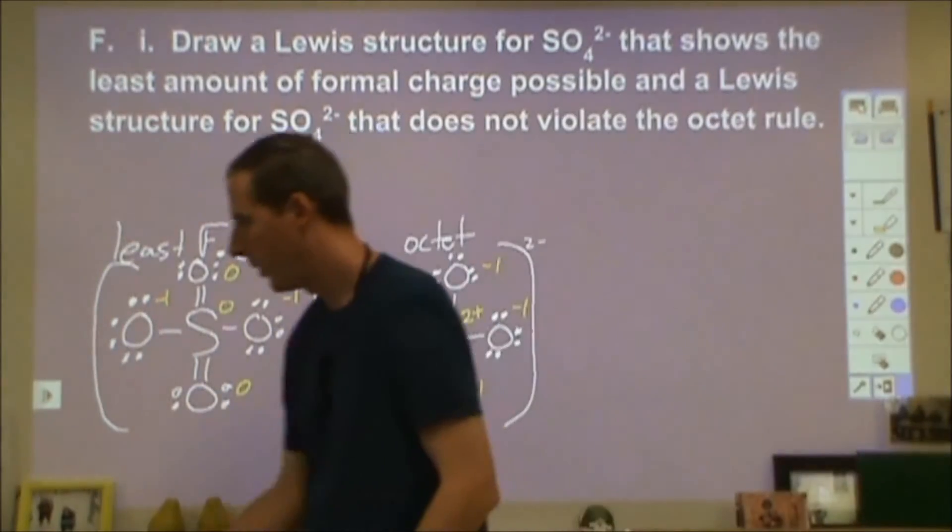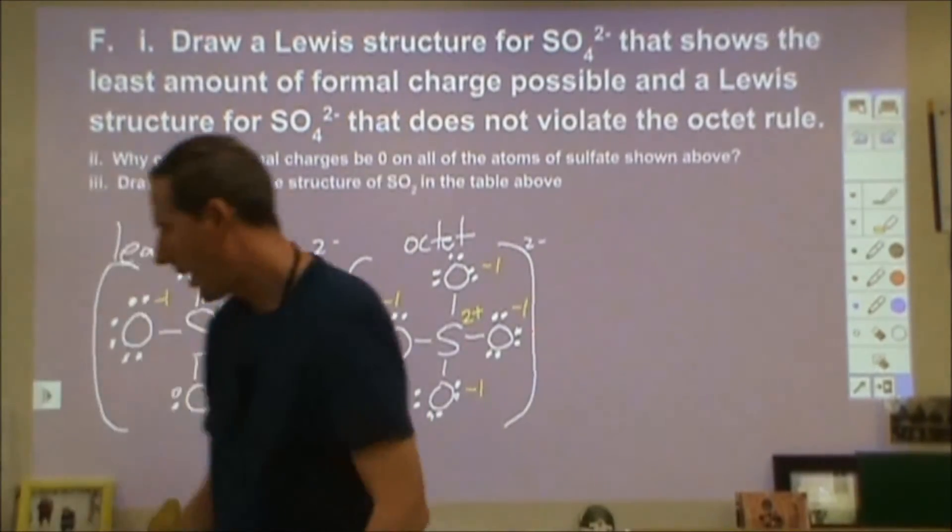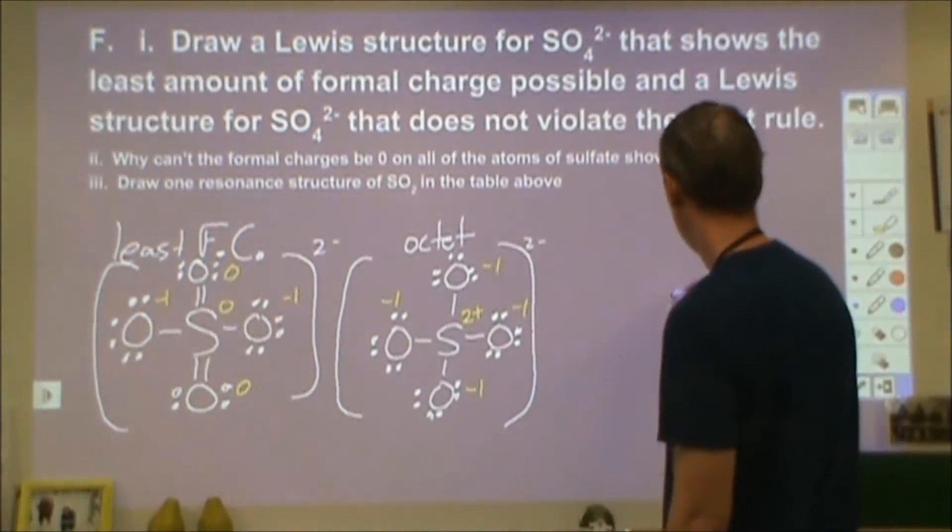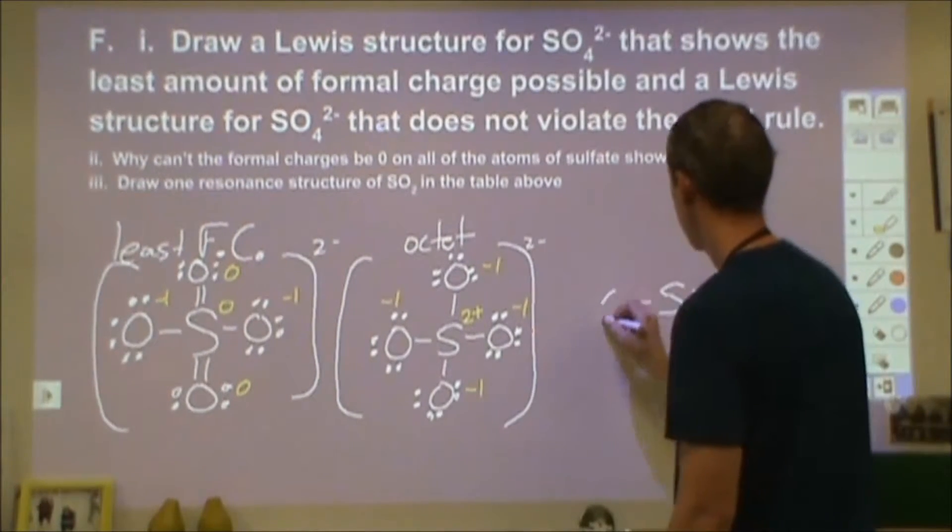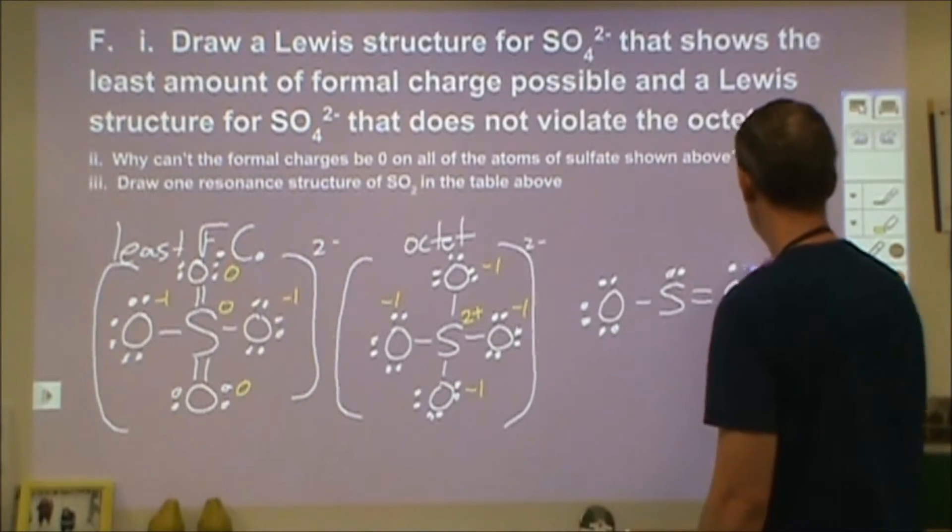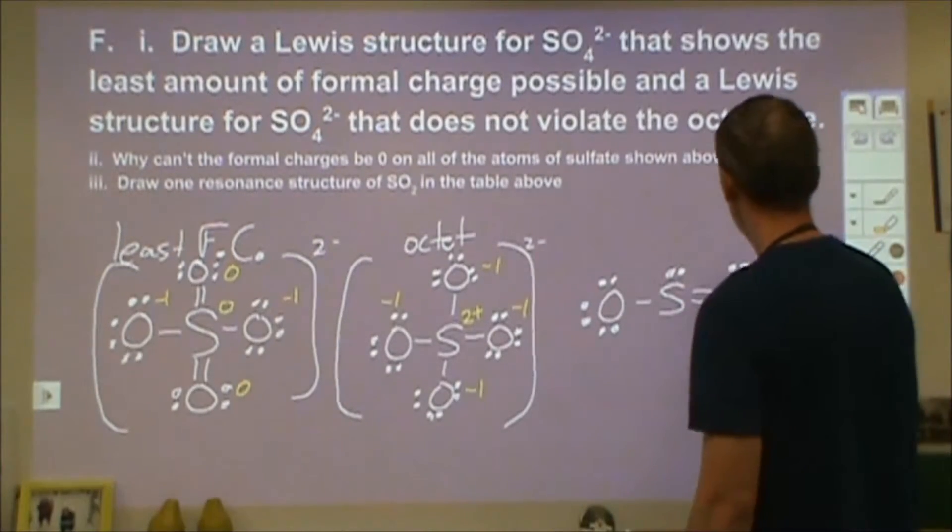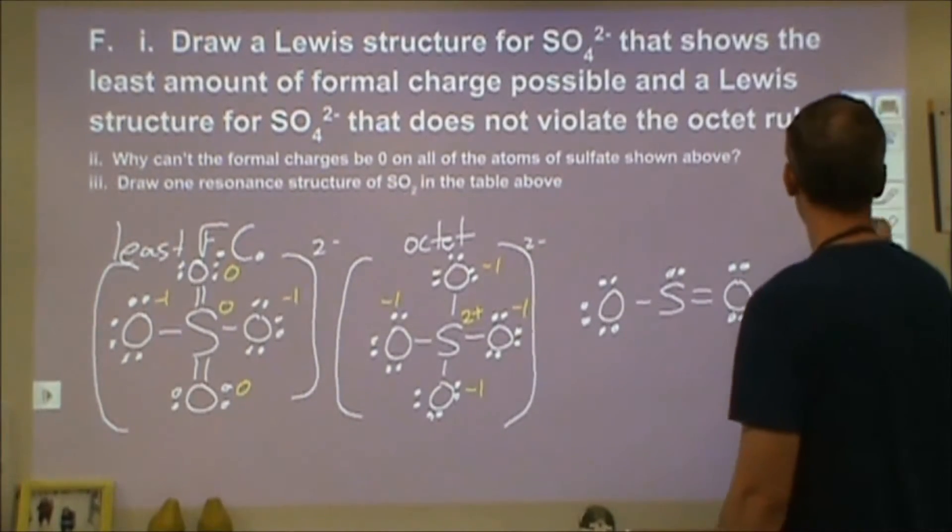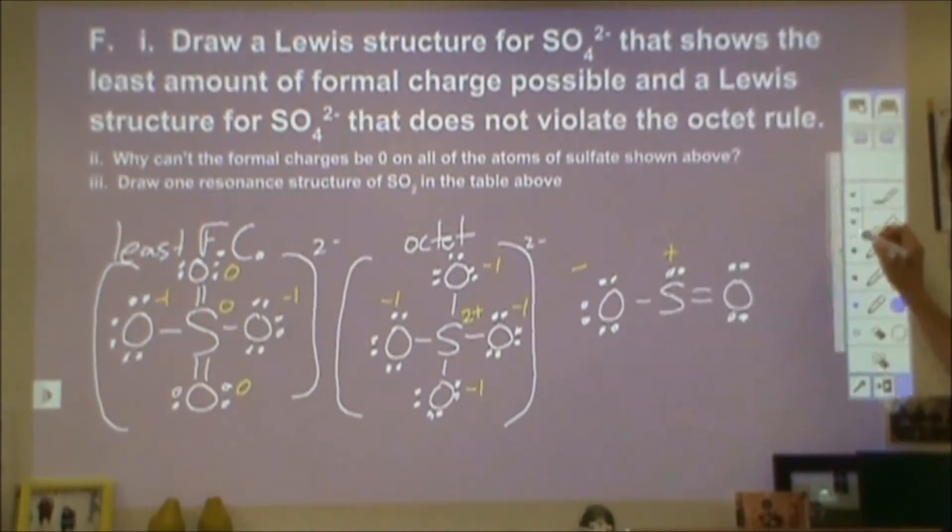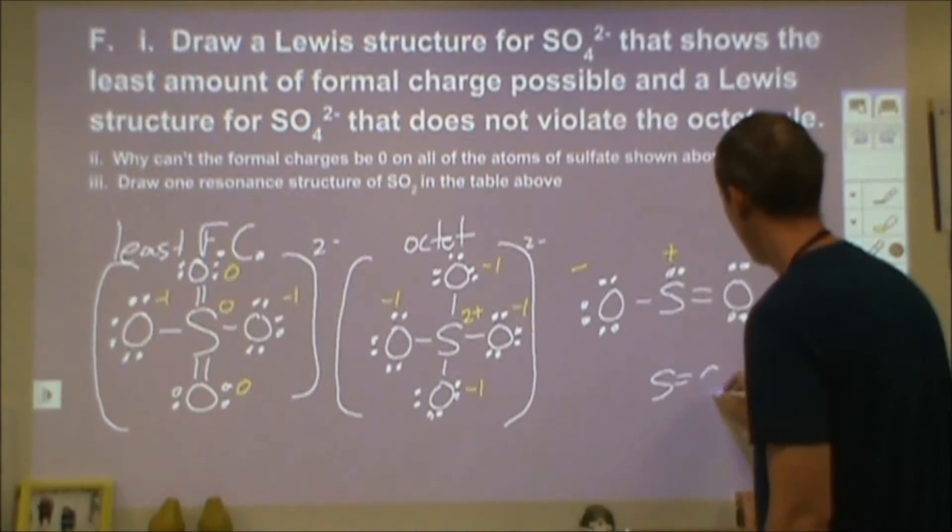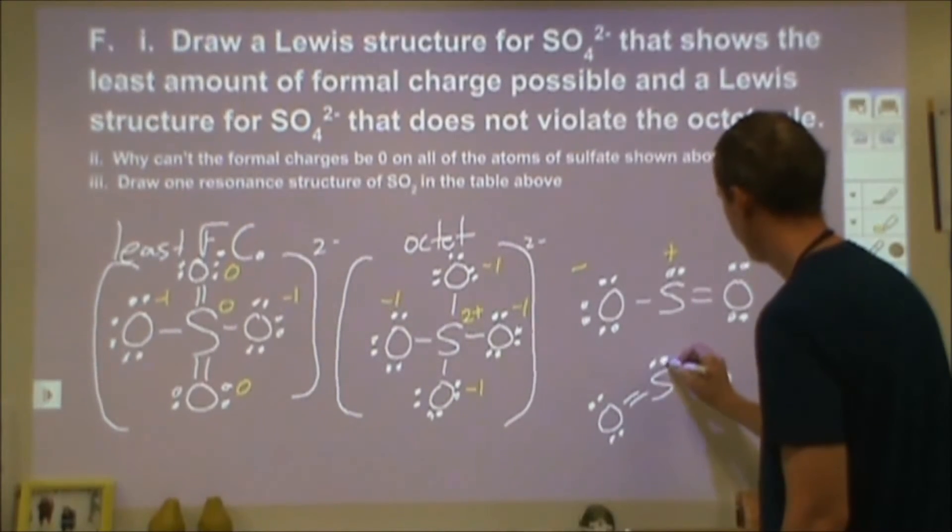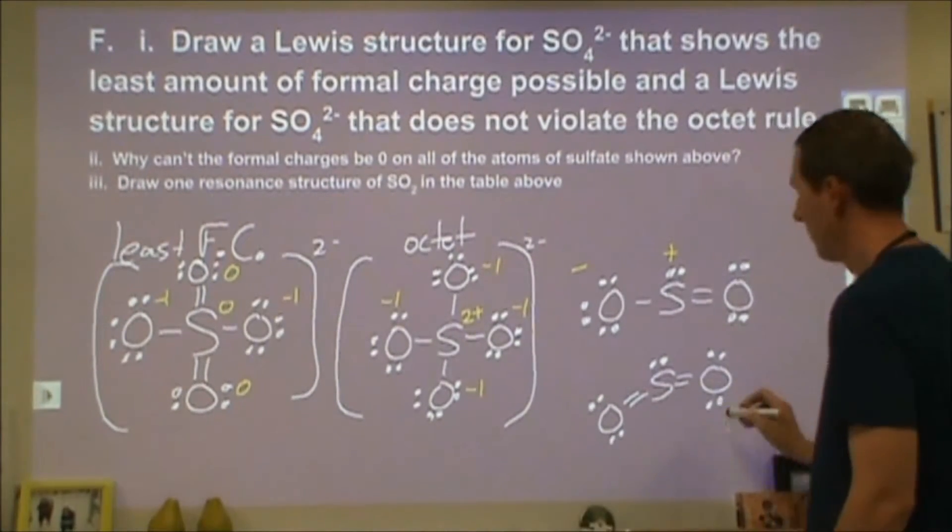I'm going to skip ahead to part three here. Part three says draw a resonance structure of SO2. There are two answers possible for that. One is where you have some formal charge like this, and then the formal charge would be a plus here and a minus here. The other answer you could have is just no formal charge, just two double bonds on the oxygens and sulfur and then two electrons there.